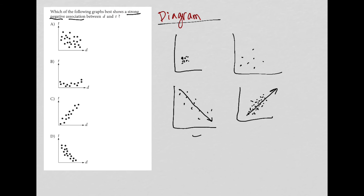So this question wants our association to be both strong, so close together and negative, so facing down. Once you understand that, the answer becomes extremely simple.